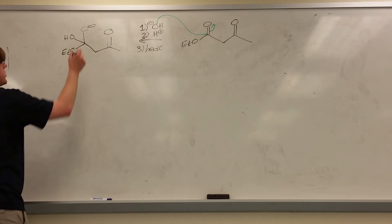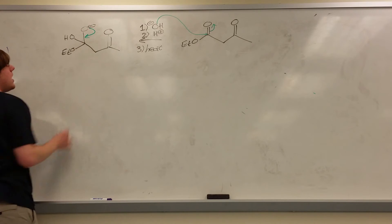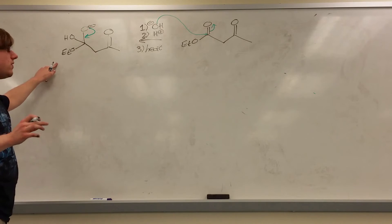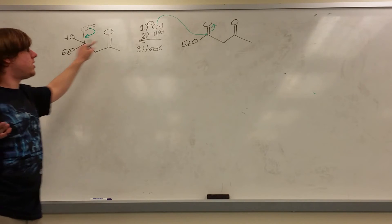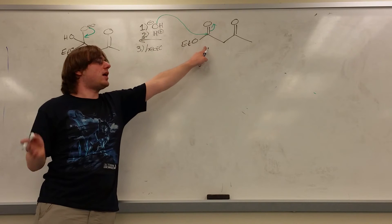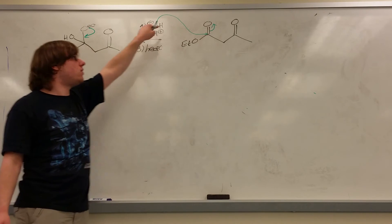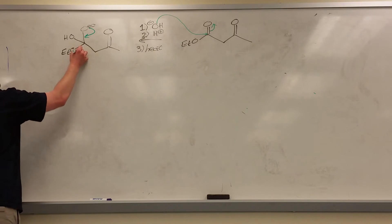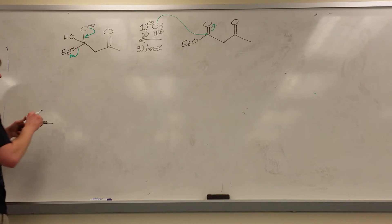Now that O minus can swing back down, and it has an option. It can kick out the OH or the OET. It can do either or, but because we assume there's a lot of OH minus, a lot more OH minus than we have of the esters, eventually that OET gets kicked out, and you're left with a carboxylic acid.